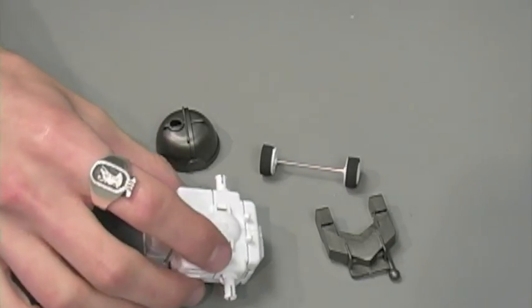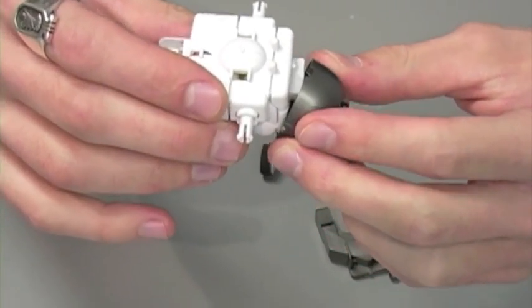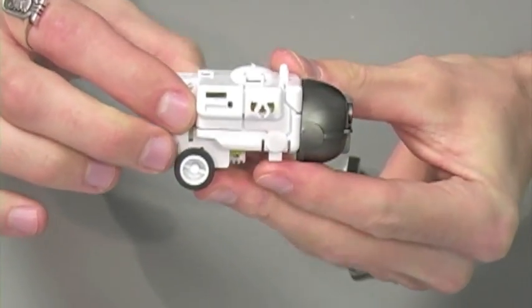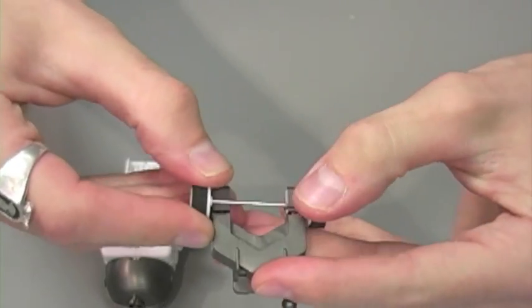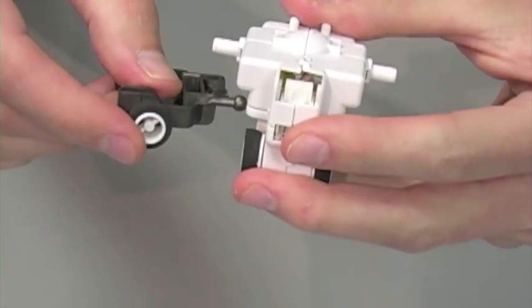For step one, you're simply going to take part B13 and attach that to the front of your upper gearbox so that it looks like this. Now we're going to take our front wheel and snap that into position on part B11. And attach those two parts together.